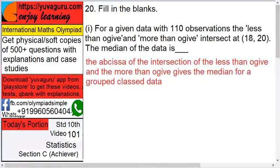So x coordinate of the intersection, that is 18, so median will be 18. Because if you go on proving all this - less than ogive, more than, drawing that, intersecting - it will take almost 10 minutes, so it will be a waste of time and I have already explained it.